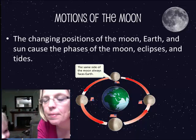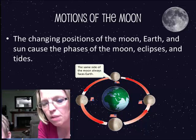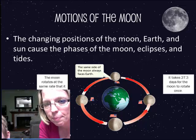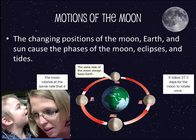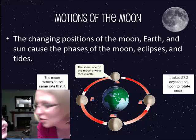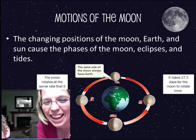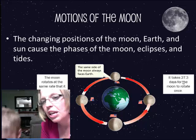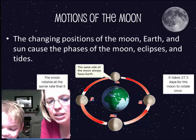The same side always faces us because as the moon goes around the Earth, the moon also rotates at just the right speed that the same side always faces us. The rotation takes around 27 days, and it revolves around 28 days. That's why the same side always faces us — kind of interesting.